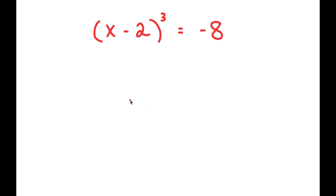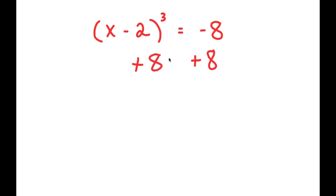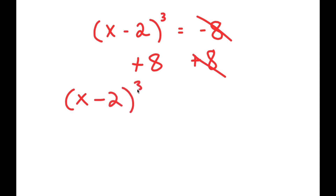In this problem, I have x minus 2 to the power of 3 is equal to negative 8. To solve this, I'm going to first start by adding 8 on both sides. These two cancel out, and I get x minus 2 to the power of 3 plus 8 is equal to 0.